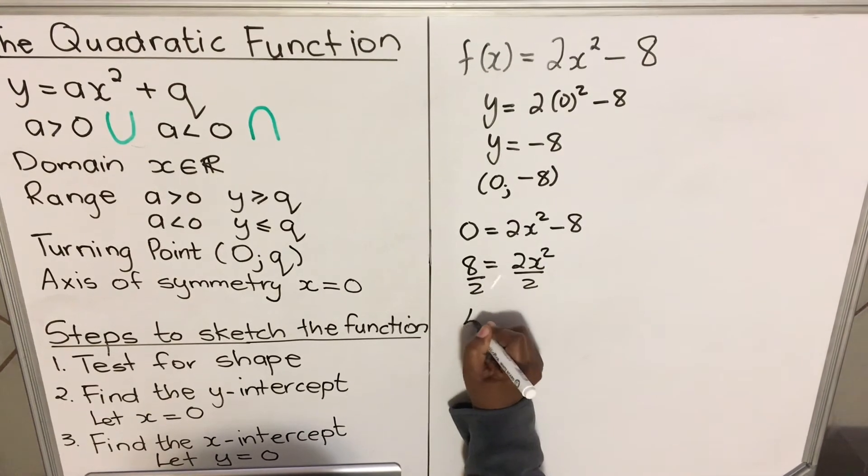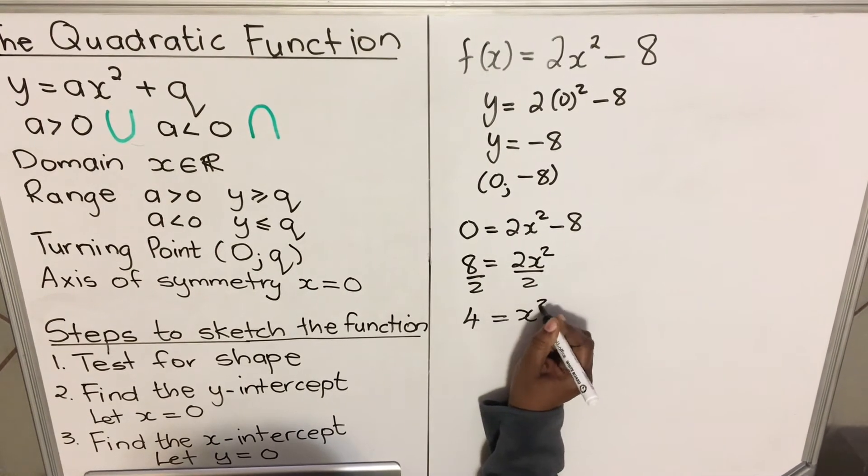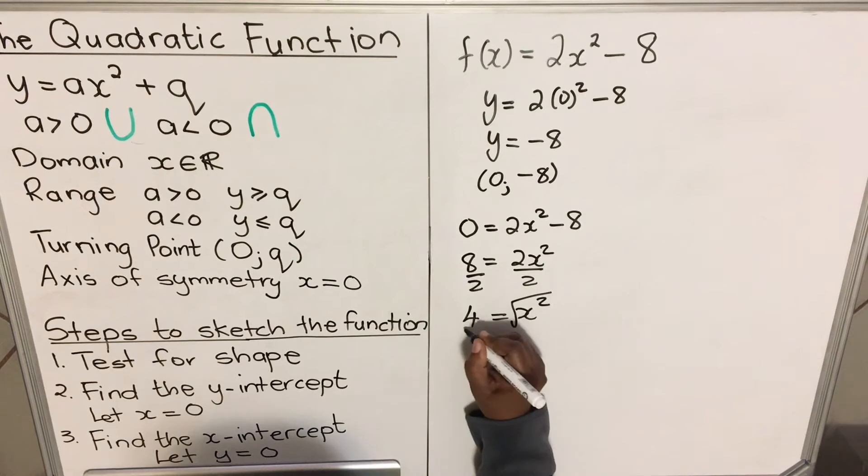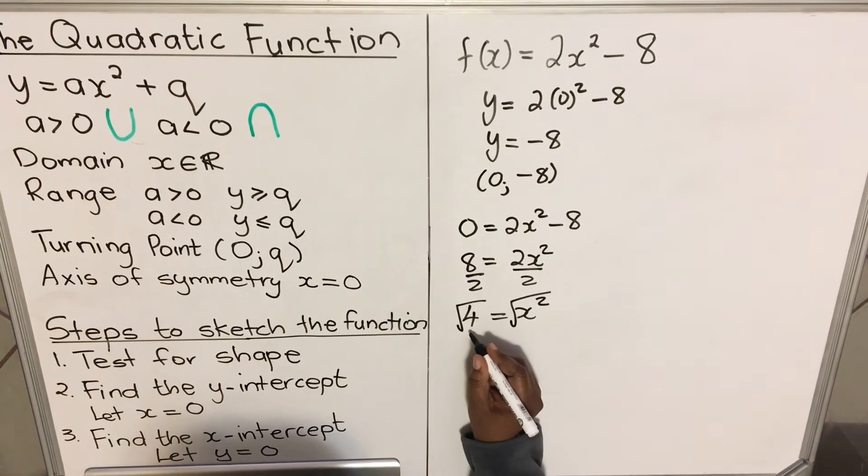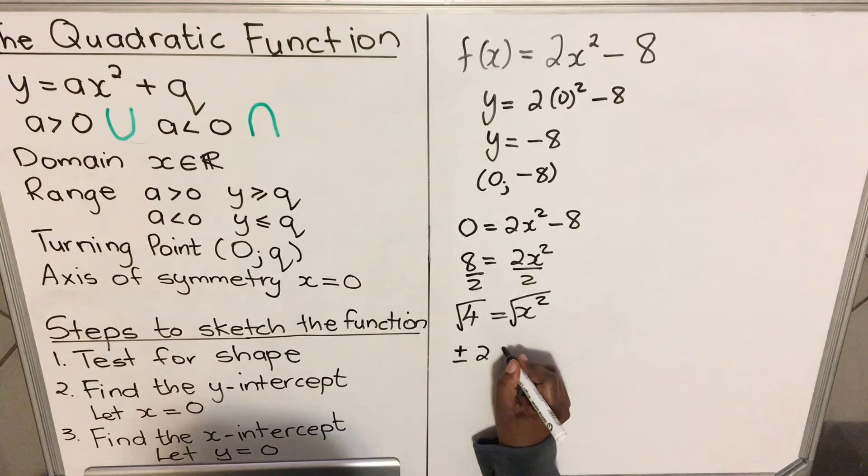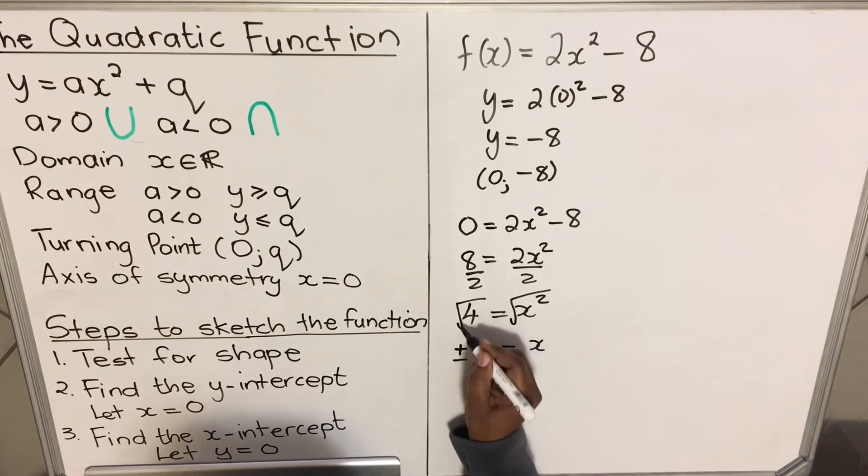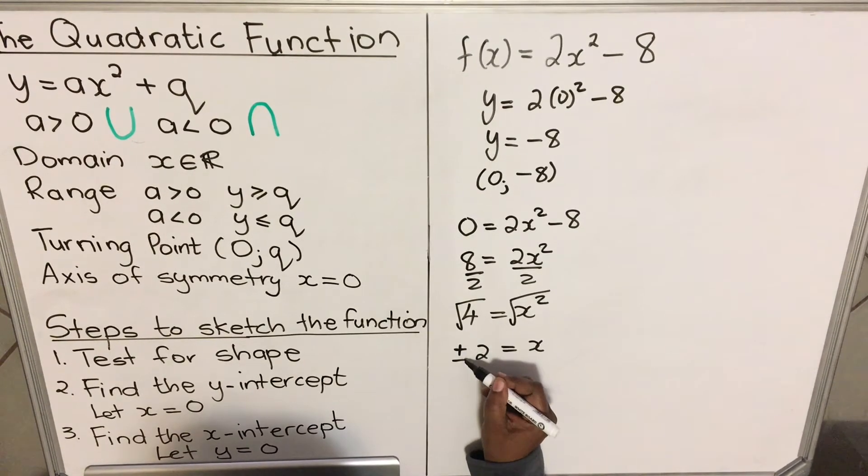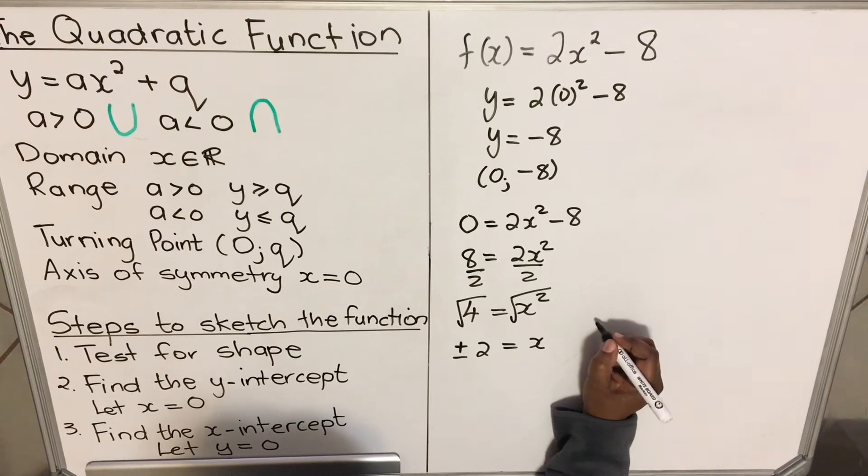4 equals x squared. We want x, so we're going to put a square root. Your answer is plus or minus 2 equals x. Let me show you why do you have these two values.